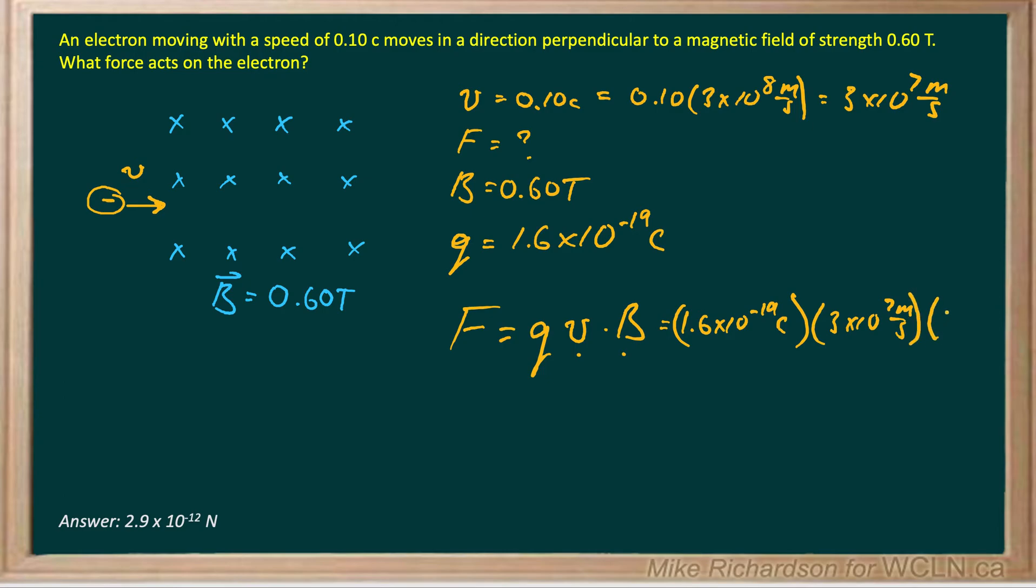And my magnetic field is 0.60 teslas. And if we work all that through, we get a force of 2.9 times 10 to the negative 12 newtons.